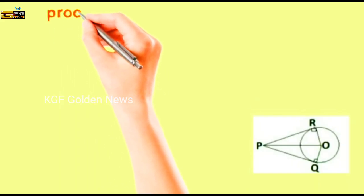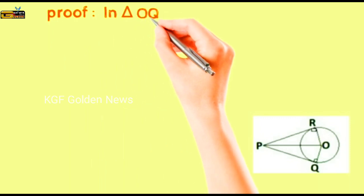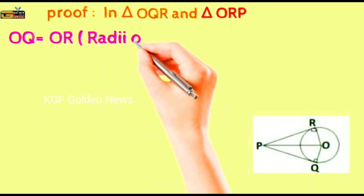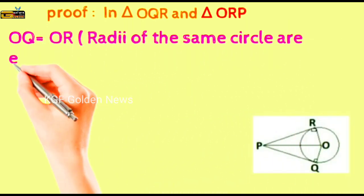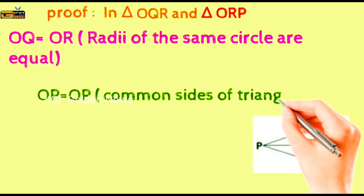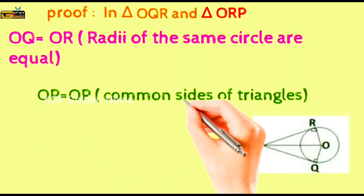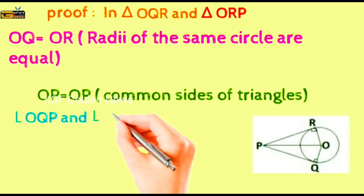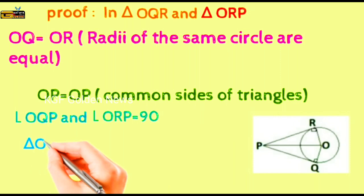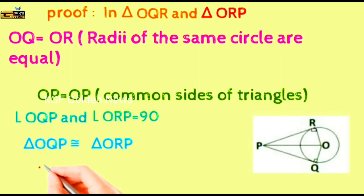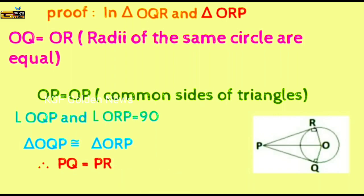Proof: In triangle OQP and triangle ORP, OQ is equal to OR. Radii of the same circle are equal. OP is equal to OP. Common sides of the triangle. Angle OQP is equal to ORP is equal to 90 degree. Therefore, triangle OQP is congruent to triangle ORP. Therefore, PQ is equal to PR. Hence, proved.